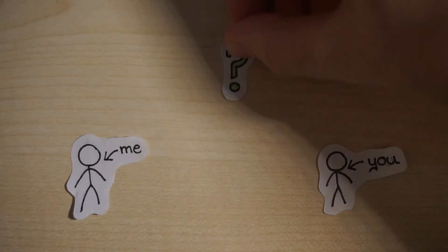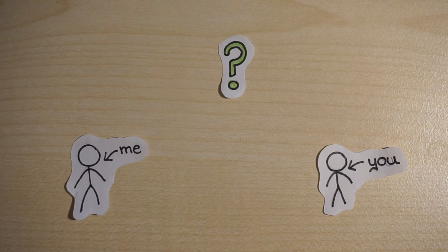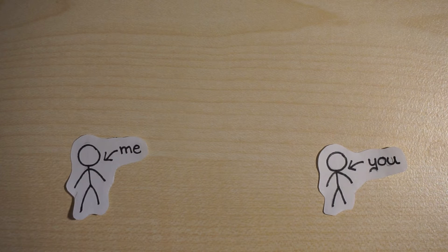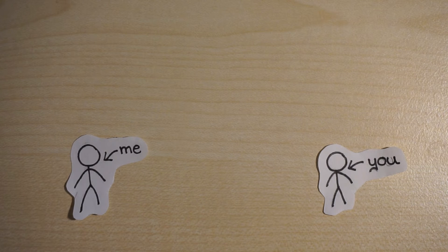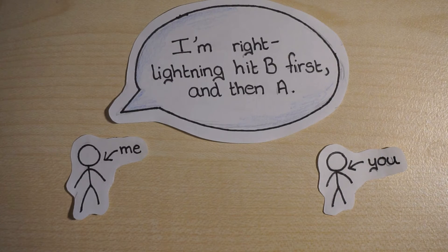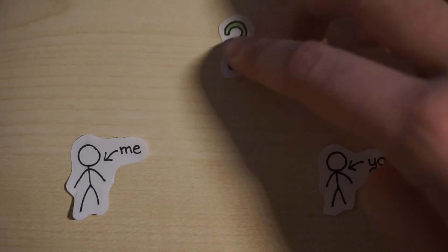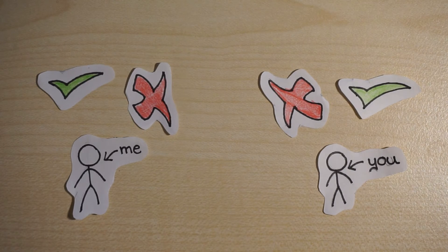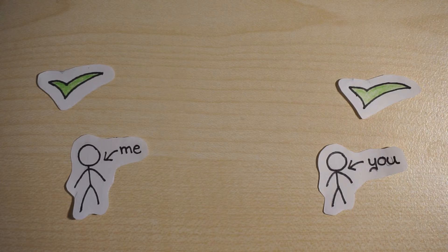So who's right? Both wave fronts reach you at the same time — you're standing midway between the front and back of the train, light travels at velocity C, so you know the lightning strikes were simultaneous. But both wave fronts reach me at different times. I sit midway between A and B, and light travels at velocity C in my frame of reference too. So I know the lightning strikes were not simultaneous. Each of us are correct within our own frame of reference, and because neither frame is any better or worse than the other, there's no basis for saying either of us is wrong.